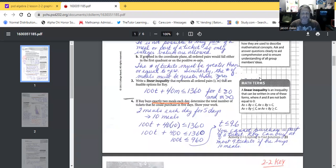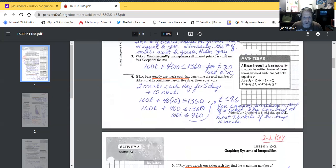B, if graphed in the coordinate plane, all ordered pairs would fall either in the first quadrant or on the positive M axis. The number of tickets must be greater than or equal to zero. Similarly, the number of meals must be greater than zero.